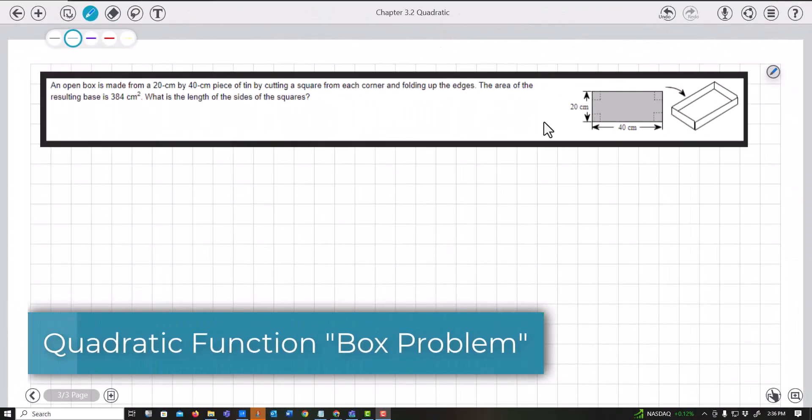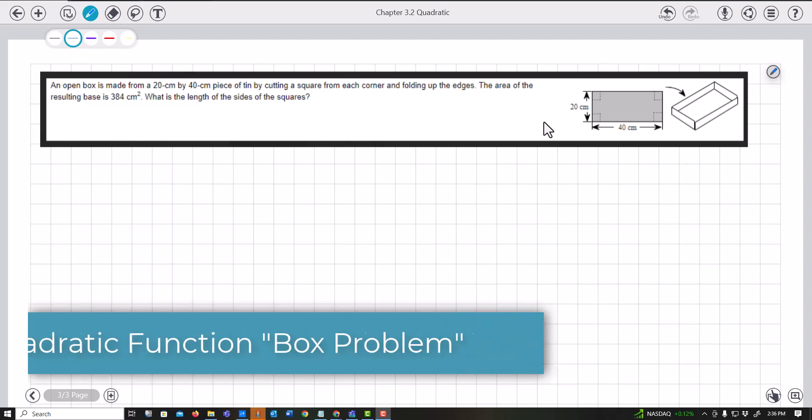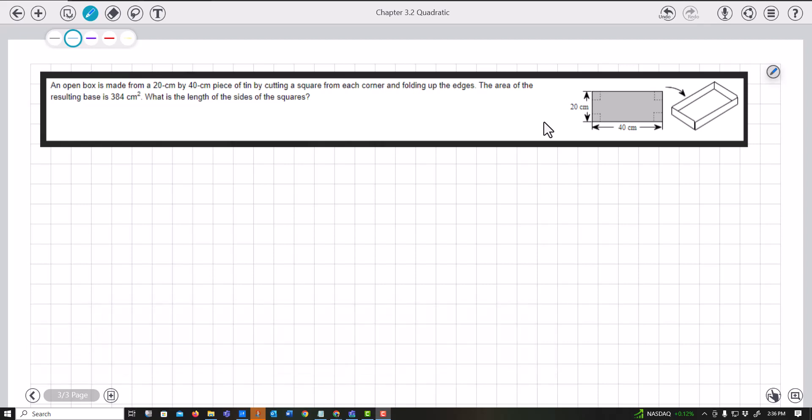We're given this box made from a 20 by 40 piece of tin by cutting a square from each corner. We don't know this length, so we call it X. All of these cutouts we're going to call X.